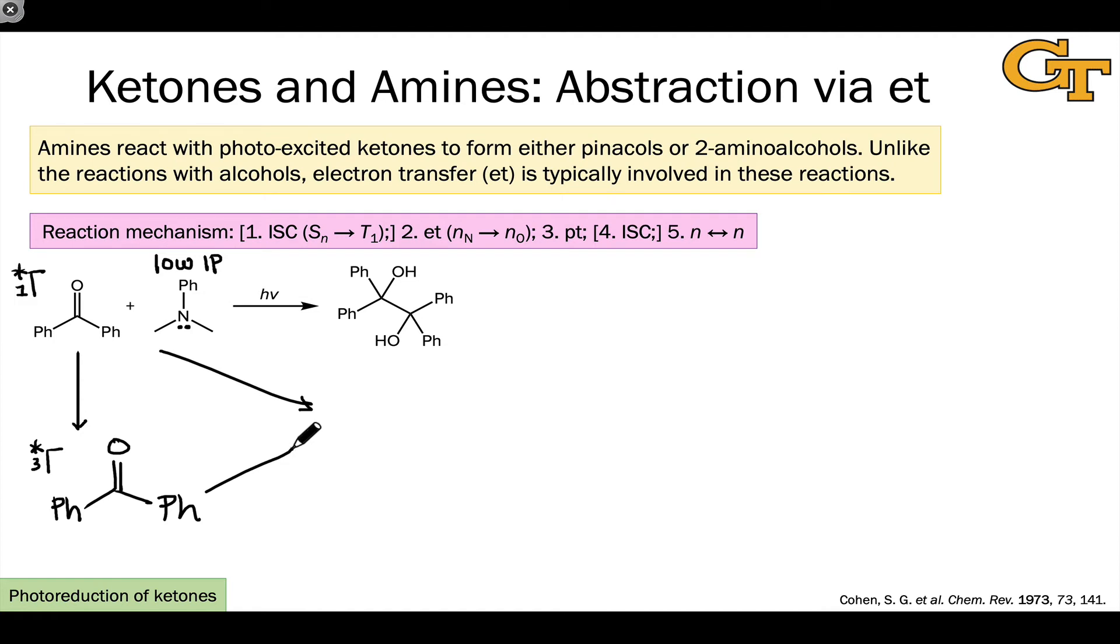What's interesting about the amine is that we can see an electron transfer process taking place. This can happen from either the singlet or the triplet state, and this gives rise to a ketyl radical anion and an amine radical cation. A proton transfer from a carbon linked to this amine nitrogen then gives our neutral ketyl radical as well as an alpha-amino radical. If these two combine in a radical-radical coupling process, we end up with a beta-amino alcohol product.